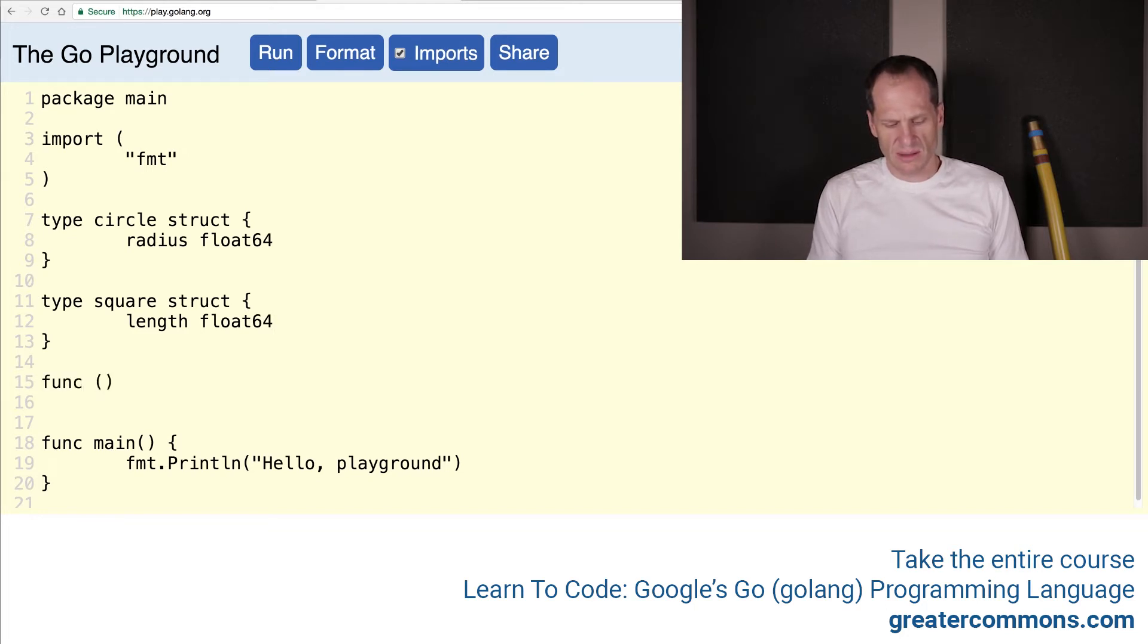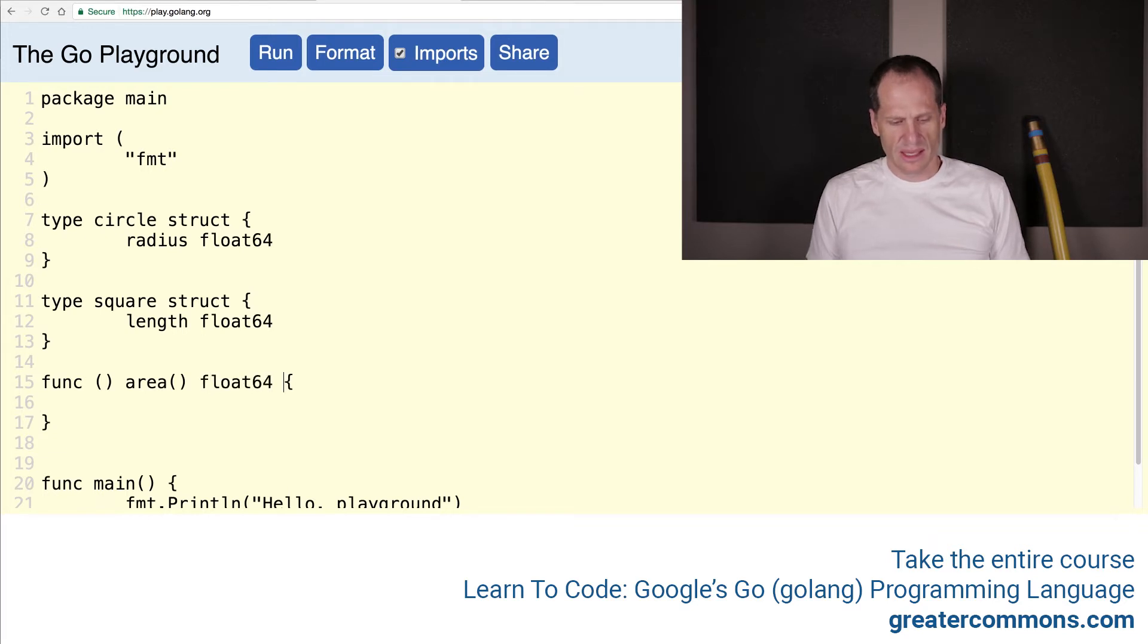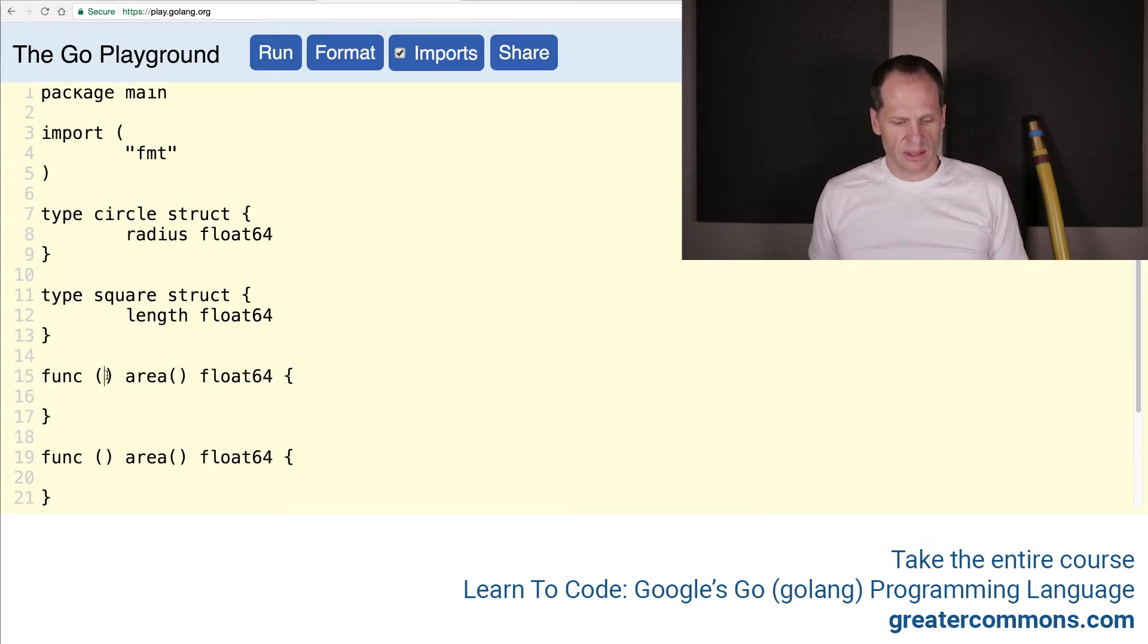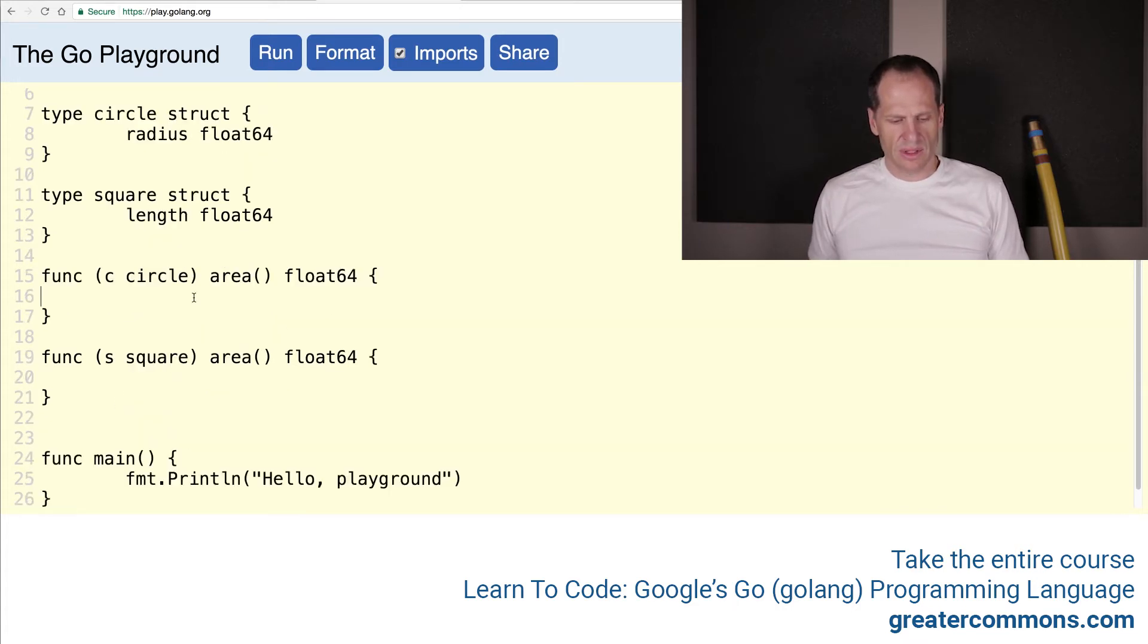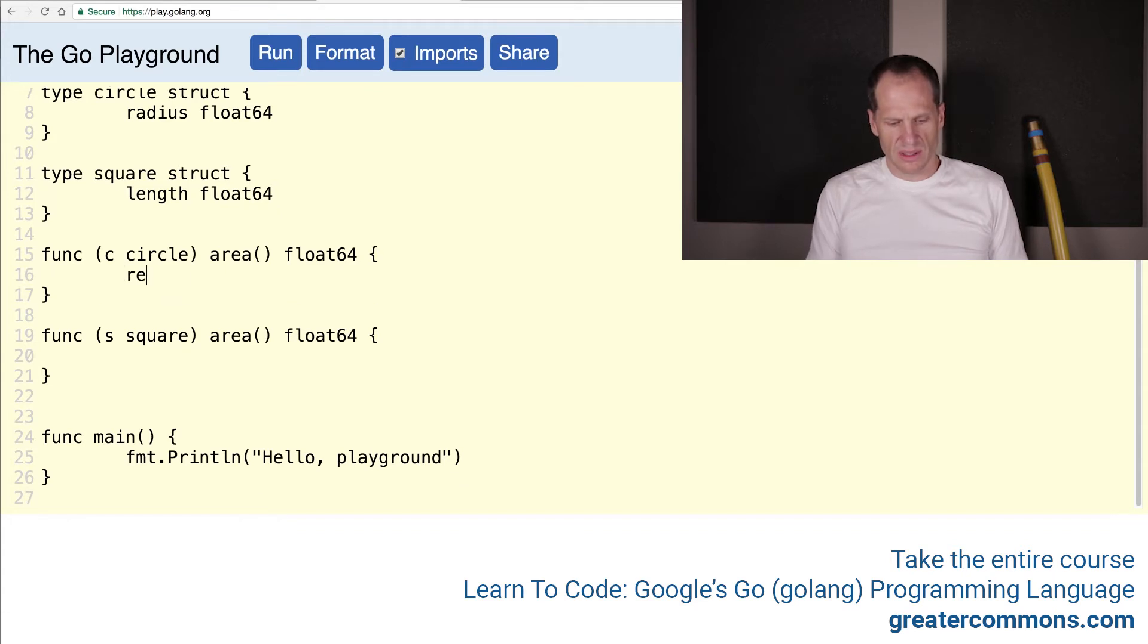So we'll do a func and then a receiver and we'll do area and then parameters and then returns. And we could put, it returns a float 64. And this one is going to be attached to, this one will be attached to a circle and this one will be attached to a square. And for the circle, we will return, it's going to be C dot radius times pi. Pi r squared. And so it'll be C dot radius pi and we'll do pi up front and then pi.